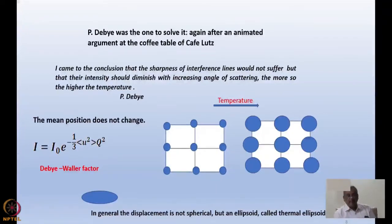Q will be G for Bragg diffraction. It does not get destroyed, rather it gets diminished in intensity. In general, the displacement is not spherical, but an ellipsoid called thermal ellipsoid. Because in every direction the bondings are not the same, and the solid will not allow equal amplitude of vibration in all directions. It will rather allow an ellipsoid, and this ellipsoid will be oriented inside the crystallographic lattice. It's called a thermal ellipsoid.